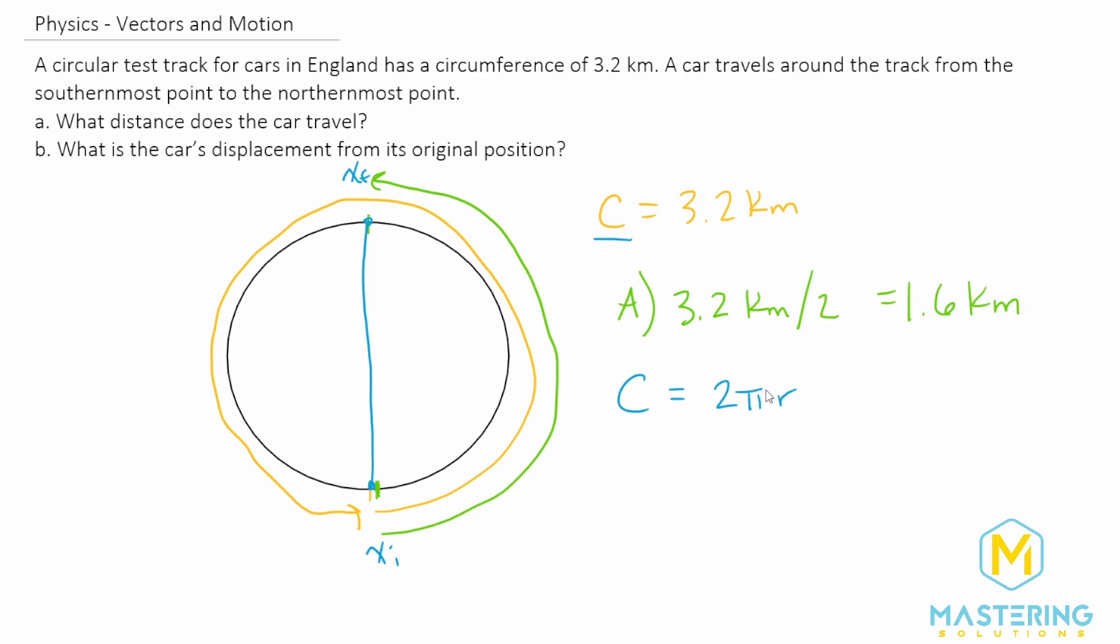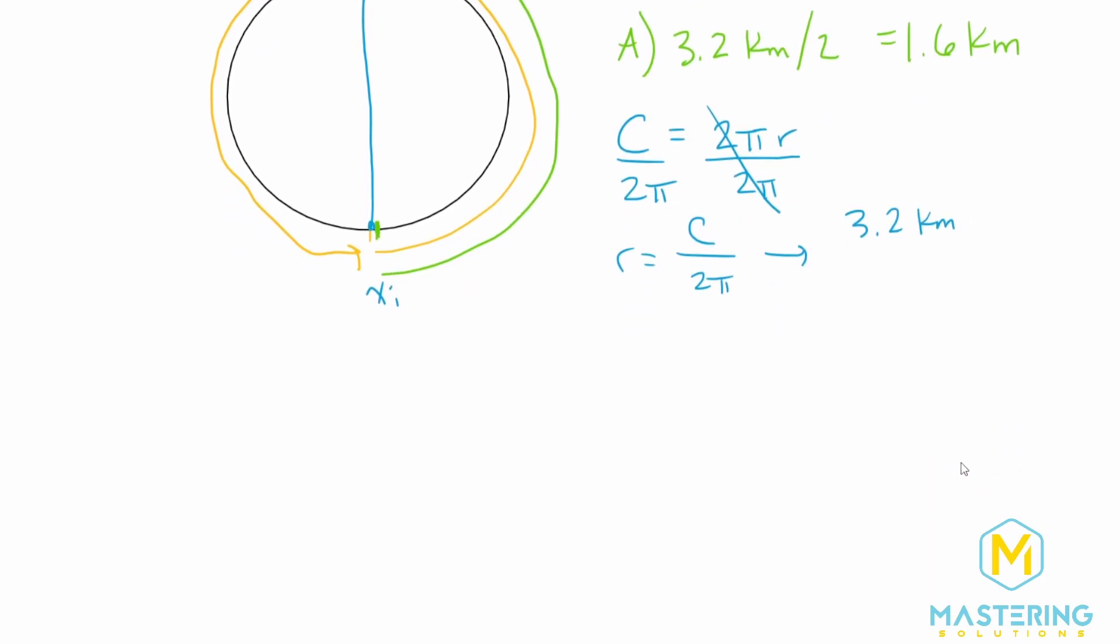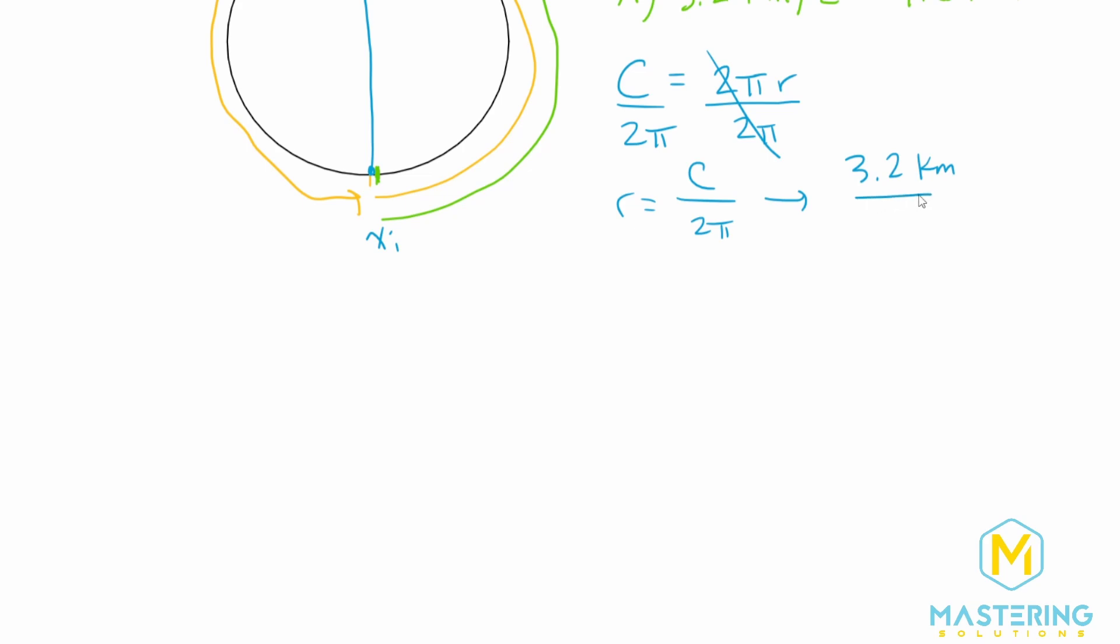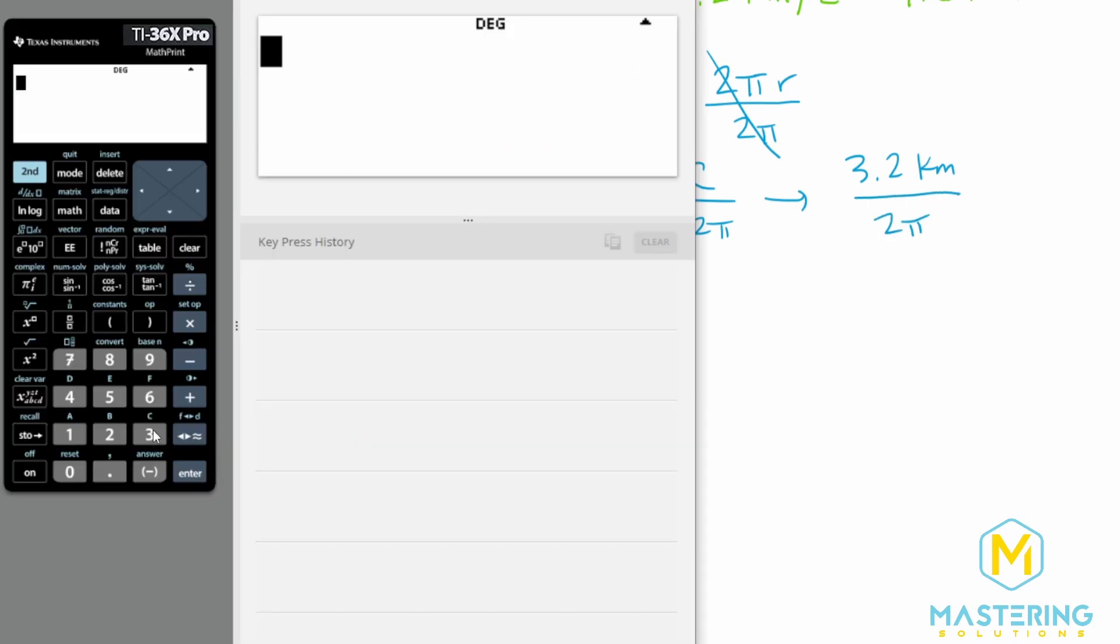Now we have the circumference, so let's isolate the radius. If we divide both sides by 2π, we'll have r equals the circumference divided by 2π. When we plug in the numbers, we have 3.2 kilometers divided by 2π.